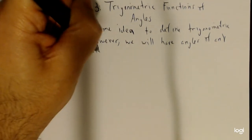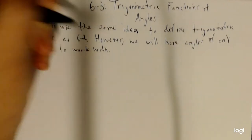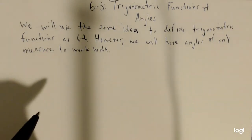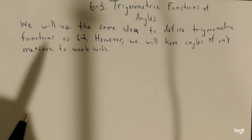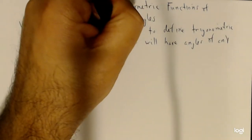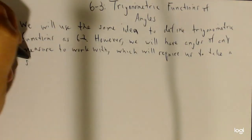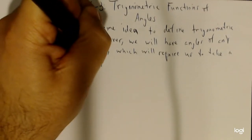If you think about it, in Section 6.2 the angles we dealt with were all acute angles — we didn't have any angles that were obtuse. So now we're basically saying we'll have any type of angle to work with, which will require us to take a slightly different approach.